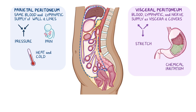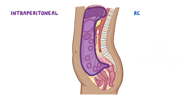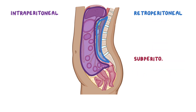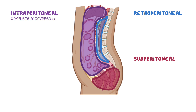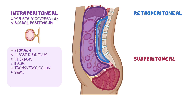Depending on their relationship with the peritoneum, abdominal and pelvic organs can be either intraperitoneal, retroperitoneal, or subperitoneal. Intraperitoneal organs are almost completely covered with visceral peritoneum, but remember they're not inside the peritoneal cavity. These organs include the stomach, first part of the duodenum, jejunum, ileum, transverse colon, sigmoid colon, liver, and spleen.